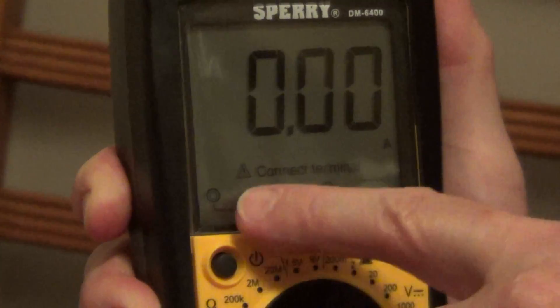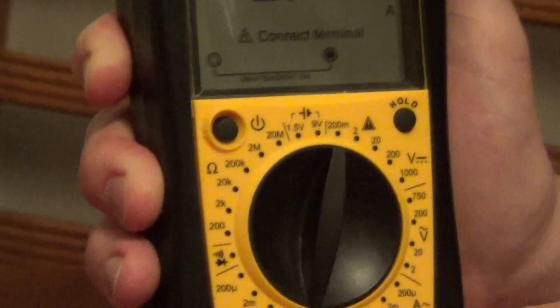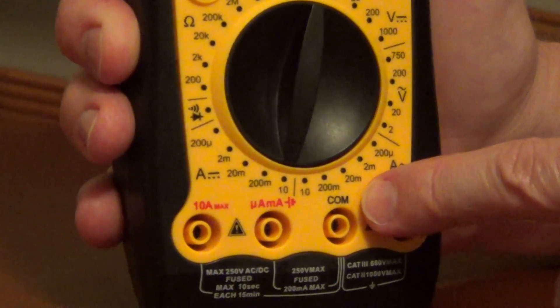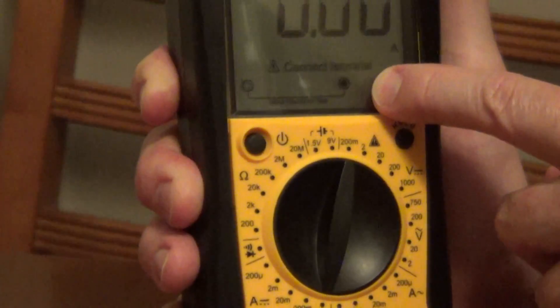This symbol guides you to where you're plugging in your probes. Your black probe is always connected to COM, which is the black dot here.